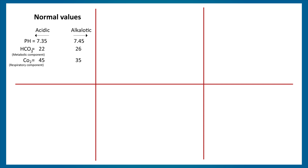Before starting, the first thing you should know is the normal values. The normal value for pH is in the range of 7.35 to 7.45. Anything below 7.35 is acidic, while anything above 7.45 is alkalotic. HCO3 represents the metabolic component and its normal value is in the range of 22 to 26. Below 22 is acidic, while above 26 is alkalotic.